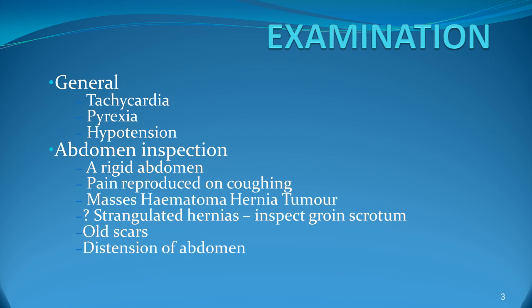When we examine the patient, look for tachycardia, pyrexia, and hypotension. These are very important in examining the abdomen. On inspection, palpation is very important and we will see a rigid abdomen, pain reproducible on coughing. Is there any mass, hematoma, hernia or tumour? Is there any strangulated hernia? Inspect the groin and scrotum to rule out any hernias. Is there any old scar of surgery and what is the degree of distension of the abdomen?